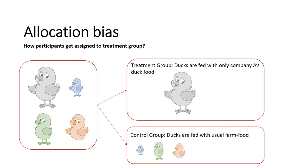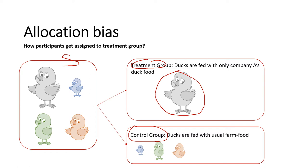The second type is allocation bias. Once you have a sample, you allocate participants into a treatment group and a control group. But if you purposely assign a healthy, well-fed duck into the treatment group receiving the company's special duck food, and sick or disabled ducks into the control group fed with usual farm food, you are manipulating the experiment. Allocation bias deals with how participants get assigned to treatments — whether they are randomized or not, and whether human intervention influences the allocation result.